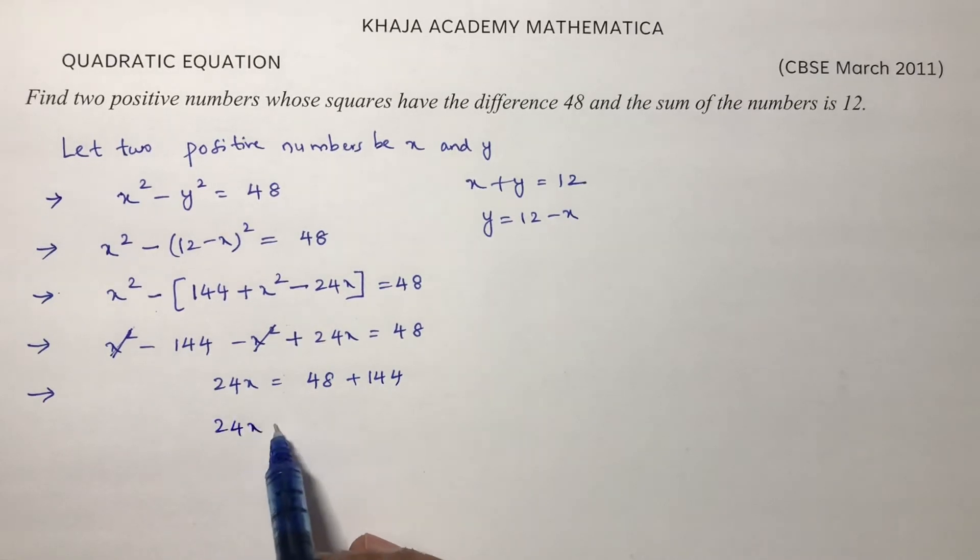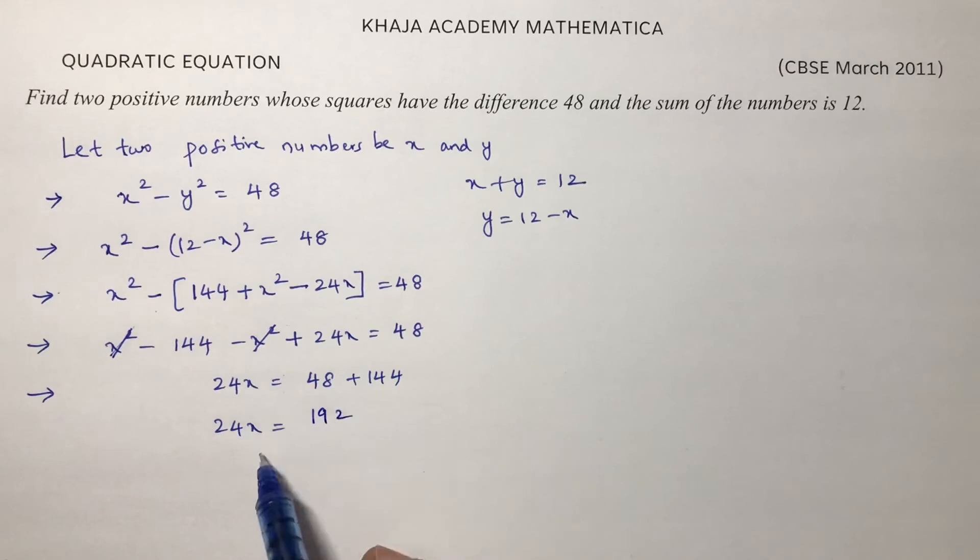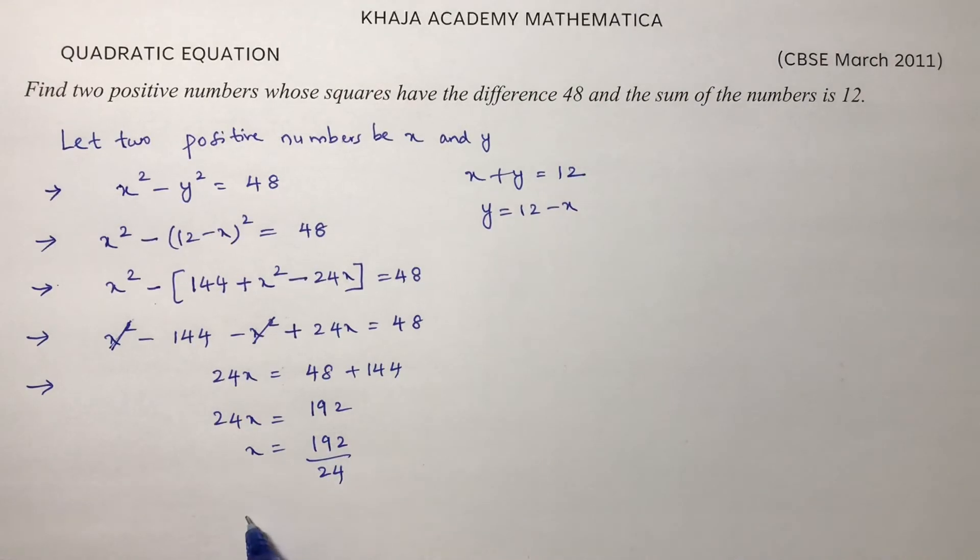So 24x = 192. x = 192/24. If we cancel this: 2 × 12, 2 × 96, 2 × 6, 2 × 4, 8... So x = 8.